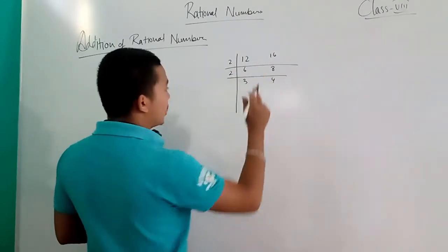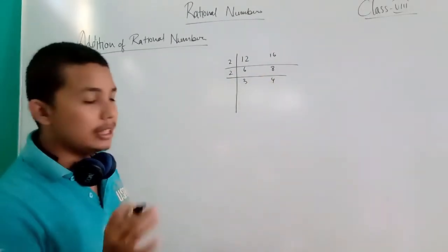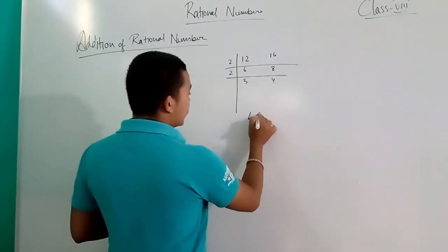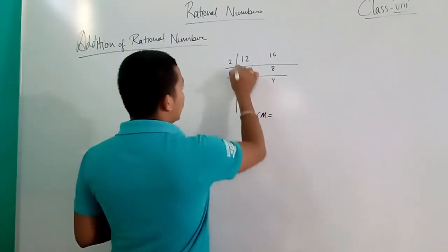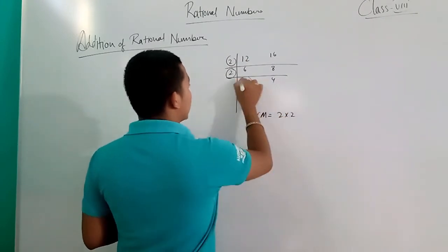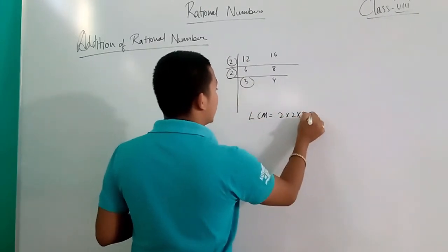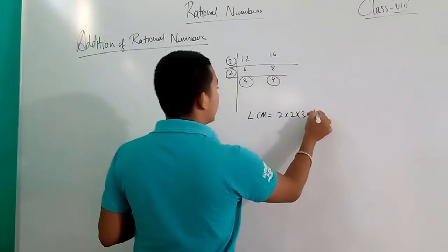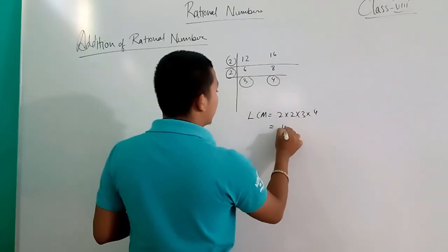That means we divide this: 2×3 or 6, and 2×4 gets 8. 2 into 2, 2 into 3 into 4. Then there is 48.